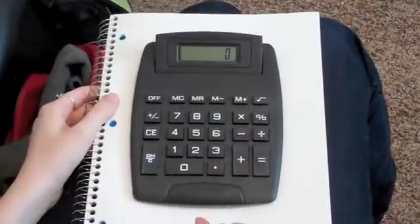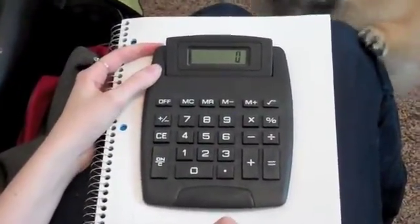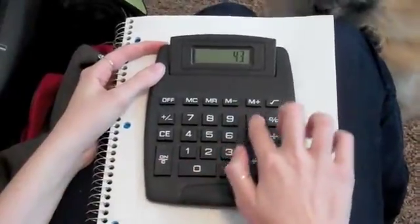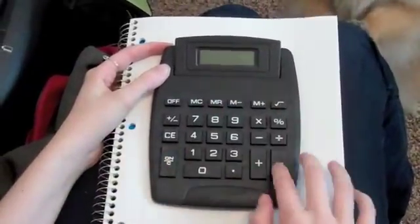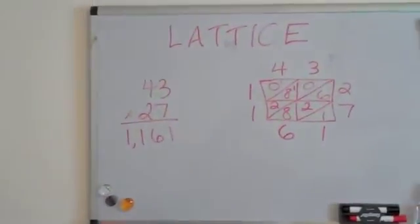Alright kids, let's try it out on the calculator to make sure we were correct. 43 times 27. 1,161. Look, that's what's up on the board.